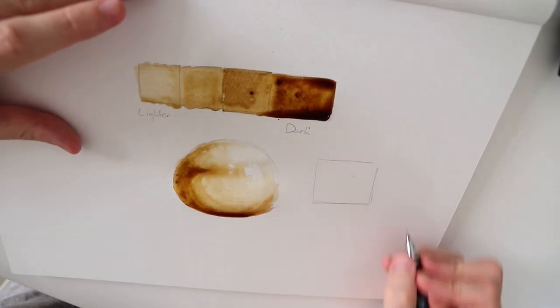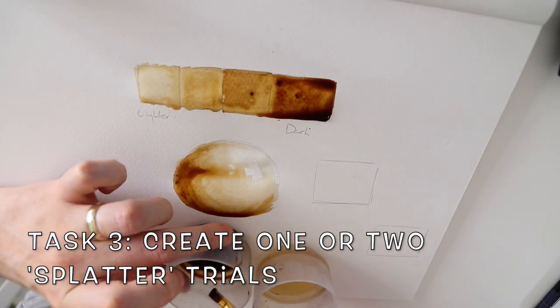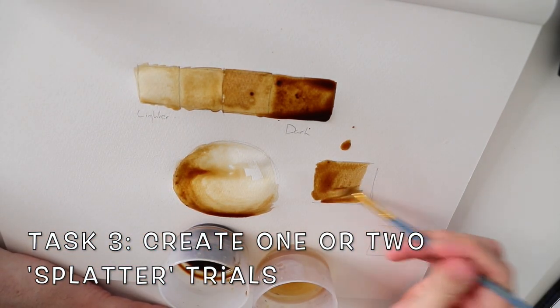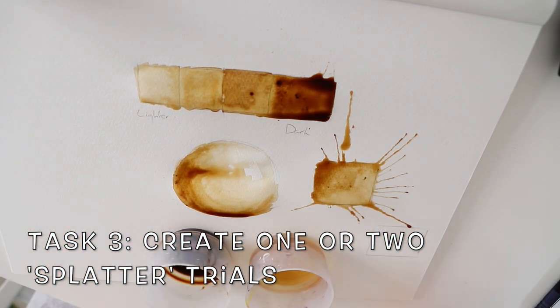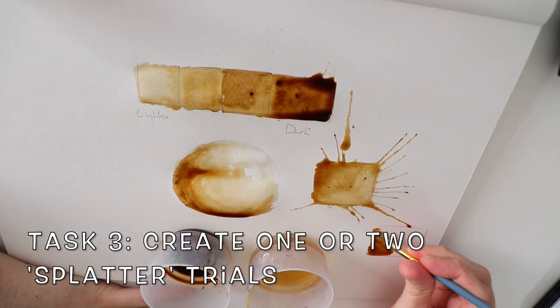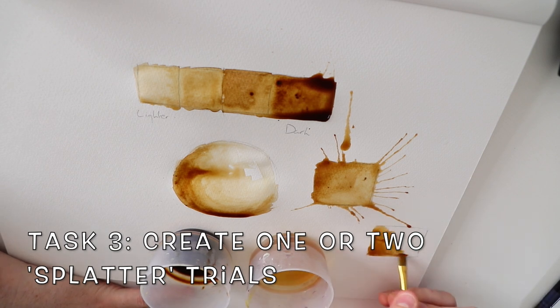Task three, we're going to create a couple of splatter trials. This is nice and simple. I'm just going to paint a square full of the coffee mix, make sure it's got quite a lot of water on it, and then I'm going to blow in different directions or with different amounts of strength to see what effect is created.